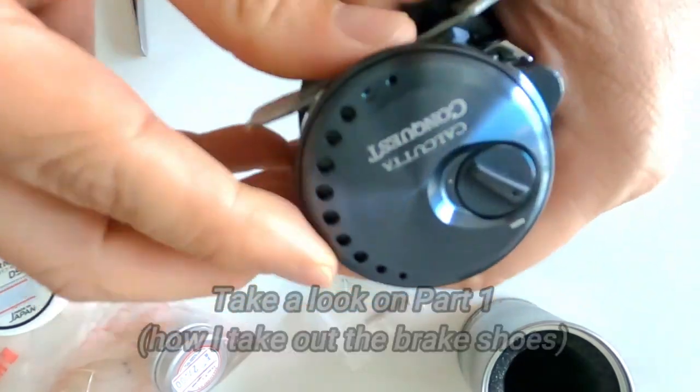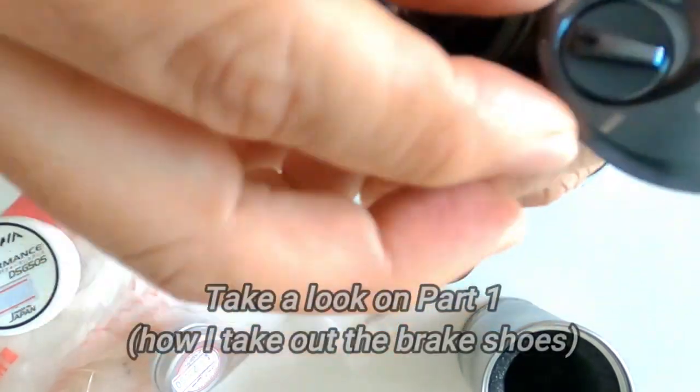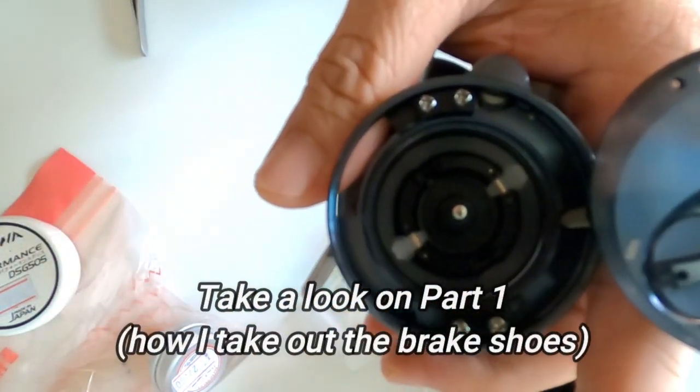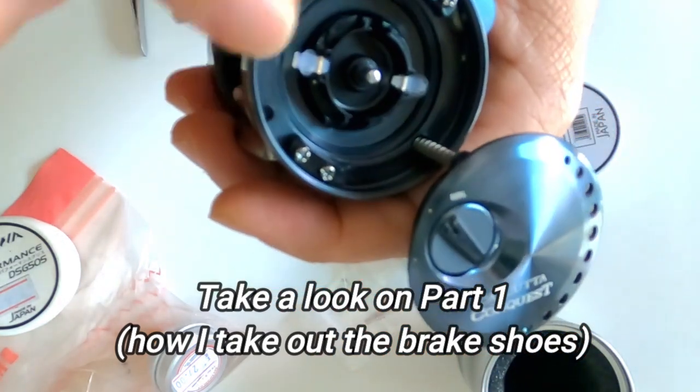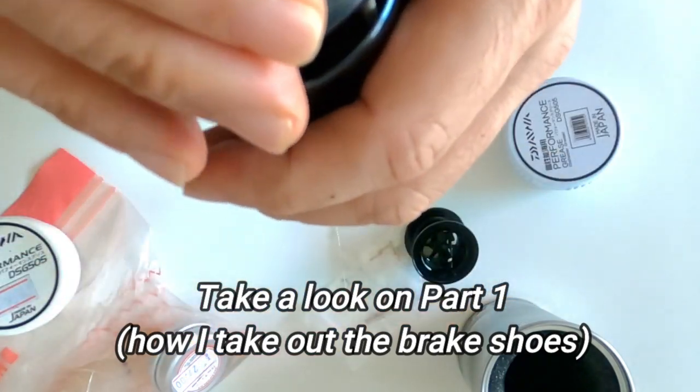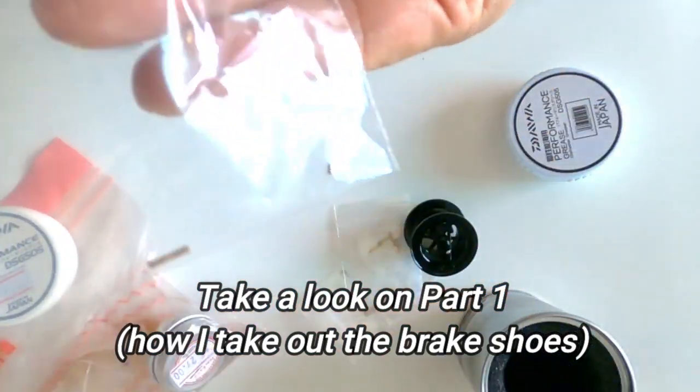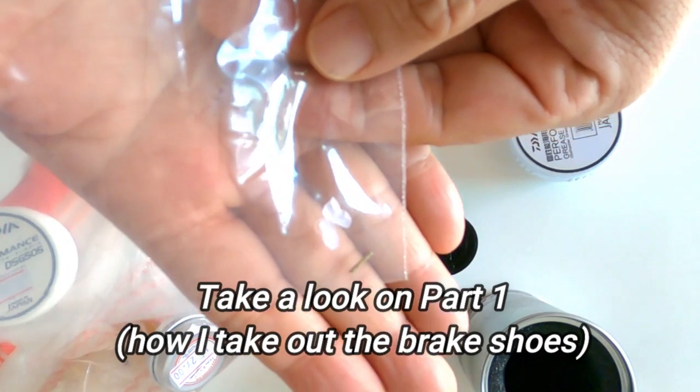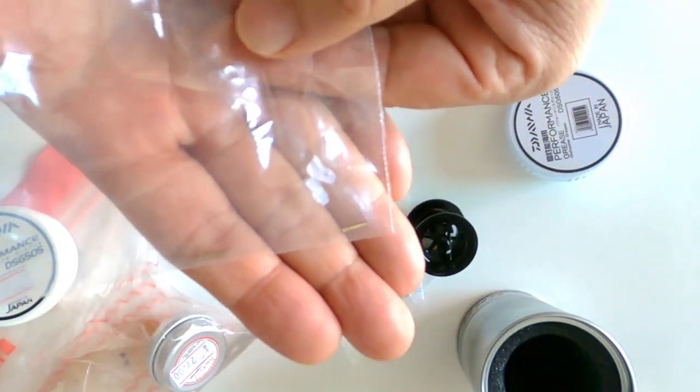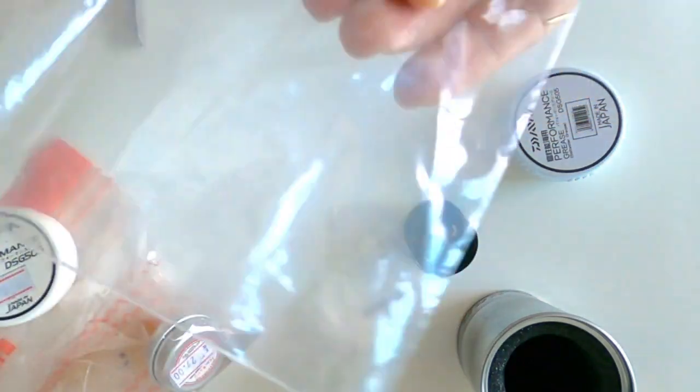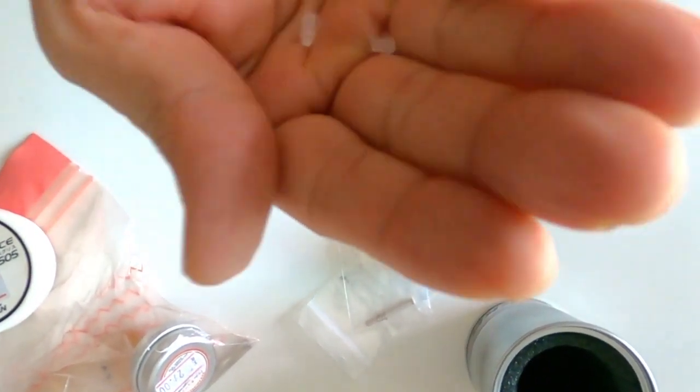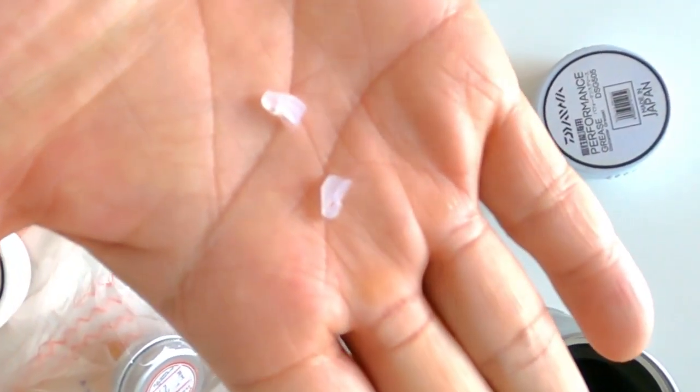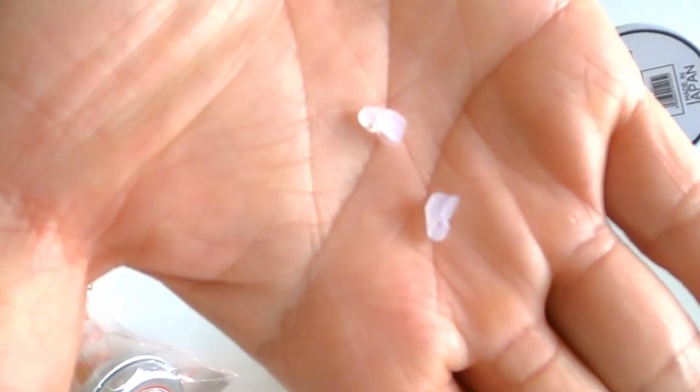In part one you can see I've taken out the brake shoes, two of them, from the original spool.